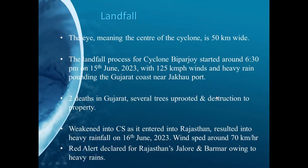On 16th June, the severe cyclonic storm weakened to a cyclonic storm as wind speed dropped to 70–80 km/h. It moved northward into the dry state of Rajasthan. A red alert was declared for Jalore and Barmer districts of Rajasthan due to heavy rains, with rainfall of around 150 mm reported from these districts.